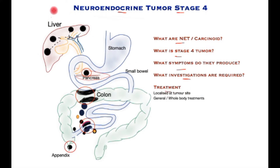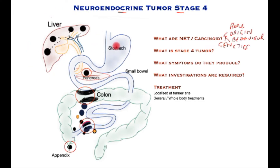This will be focused mainly on the liver because that is the commonest site of spread of these cancers. Looking at this cartoon showing the stomach, small bowel, colon, pancreas, and liver, it illustrates the common sites within the abdomen of neuroendocrine tumors: the small bowel, colon, appendix, and pancreas. These tend to spread to the lymph nodes, which have immune function and also catch cancer cells. These tumors can also spread to the liver.